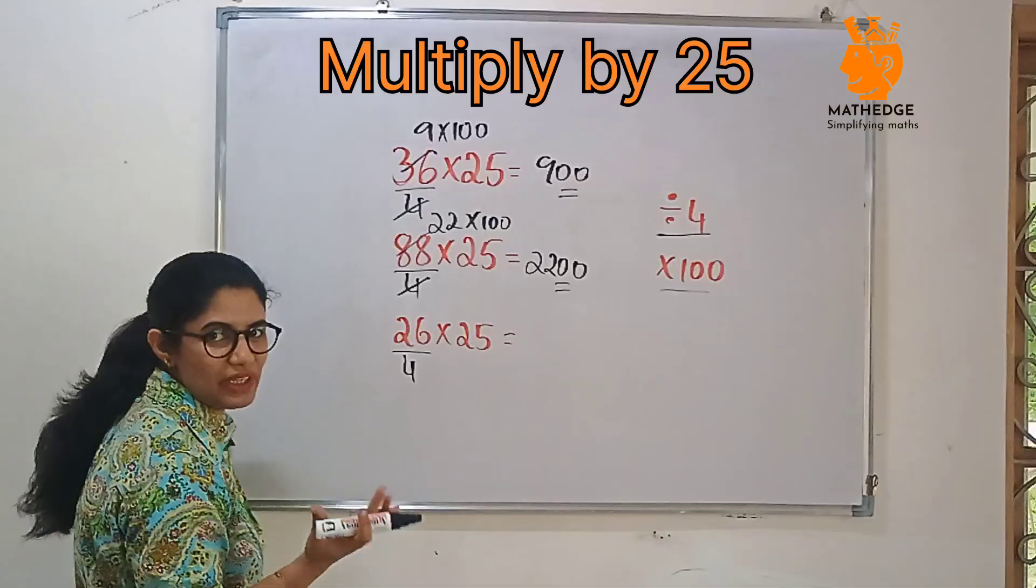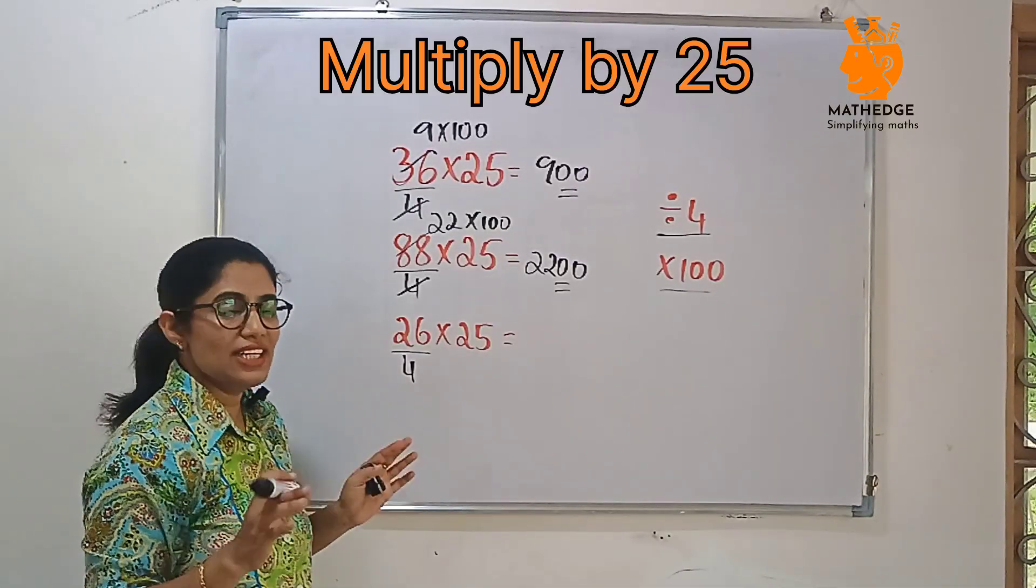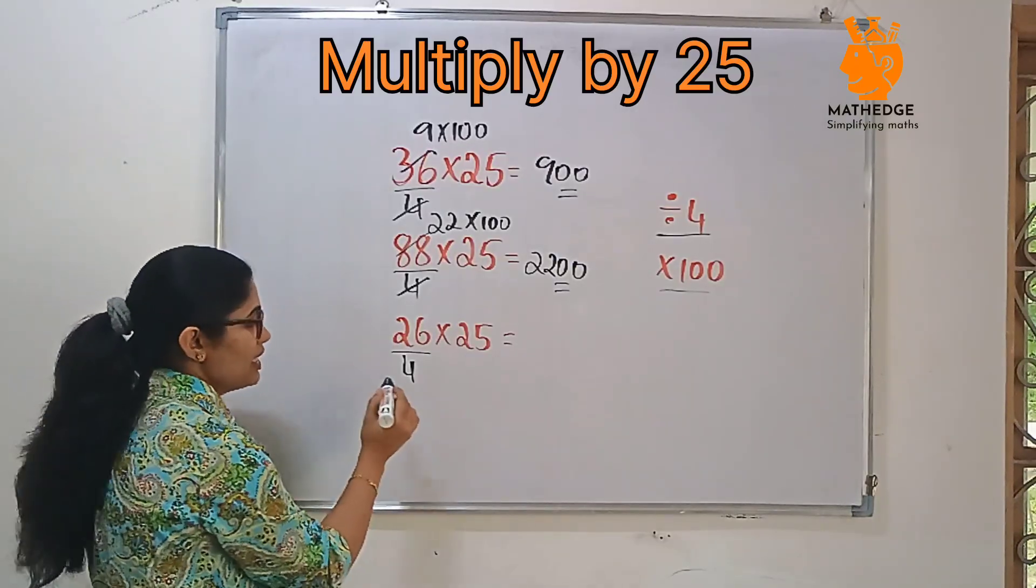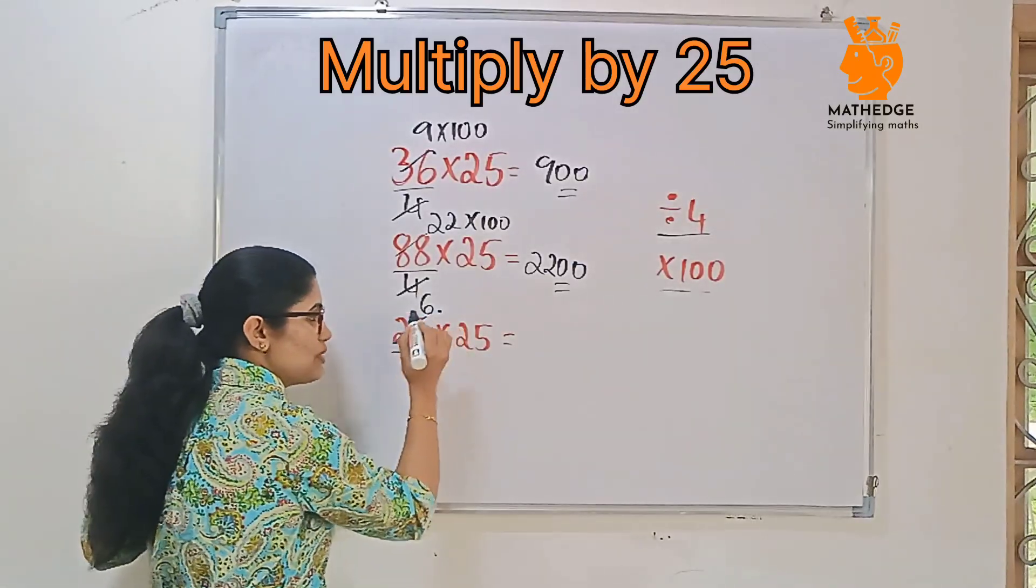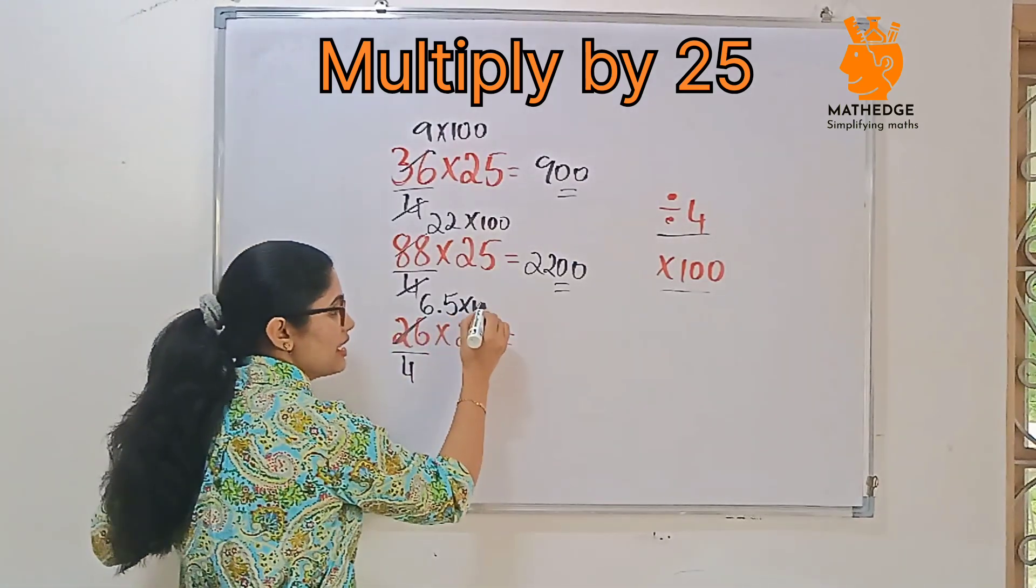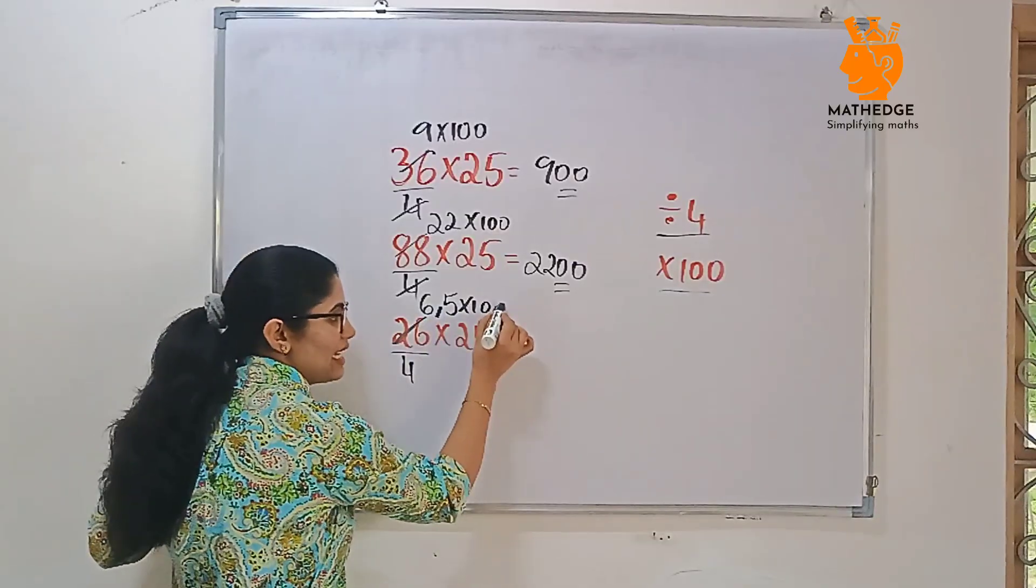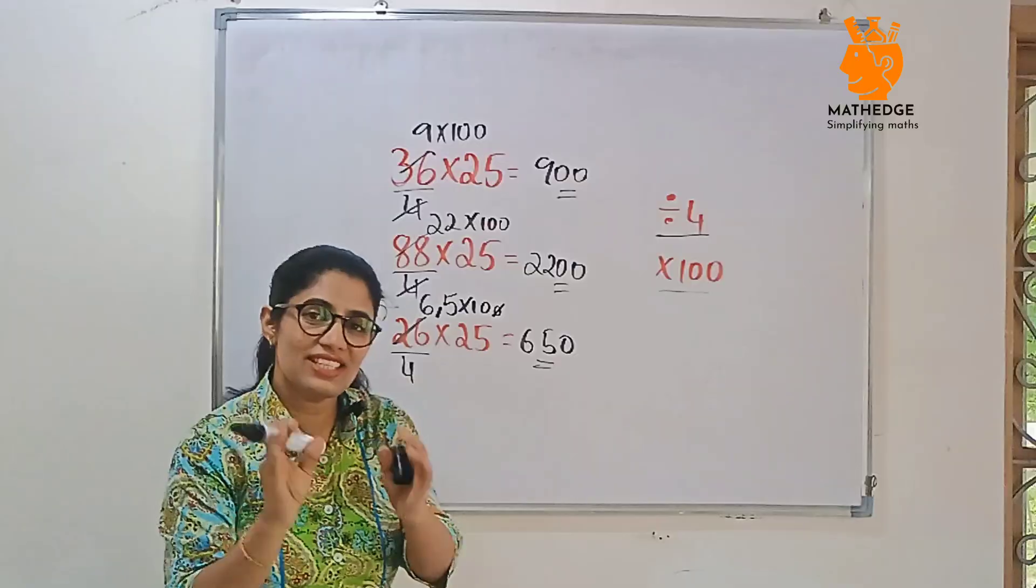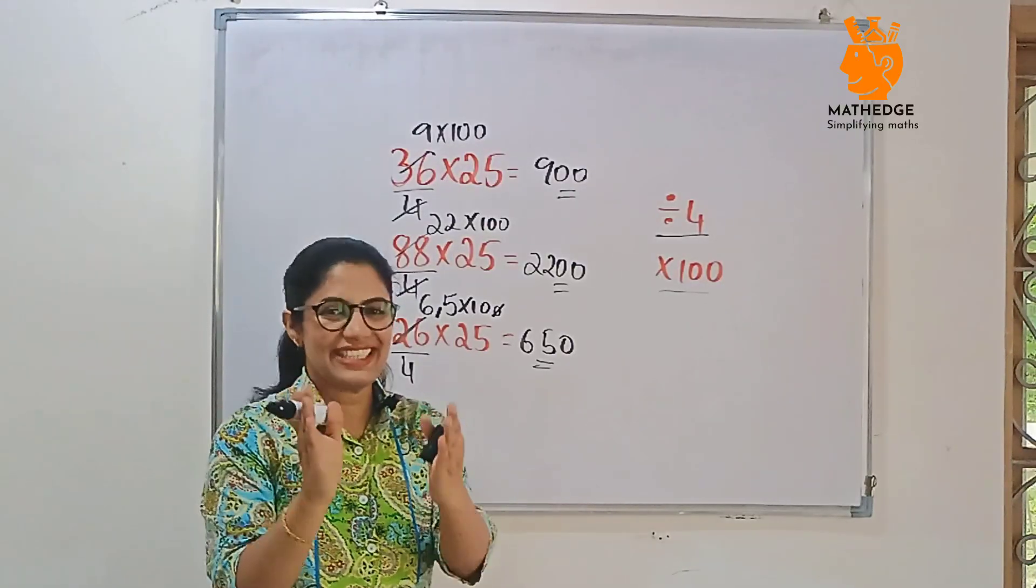If you have an odd number also, don't worry, just divide by 4. If the number is not completely divisible by 4, it is not a problem. If you get decimal also, just multiply by 100, you will get the answer. Here, 26 divided by 4: 6 sum 24, 2 will remain, put a decimal, it will become 20, 4 fives, 20. Right? Then multiply by 100. If you multiply this, decimal will cancel with 0, 6.5 into 100 is 650. Within seconds, you calculate it with no long multiplication, no addition. Easy right?